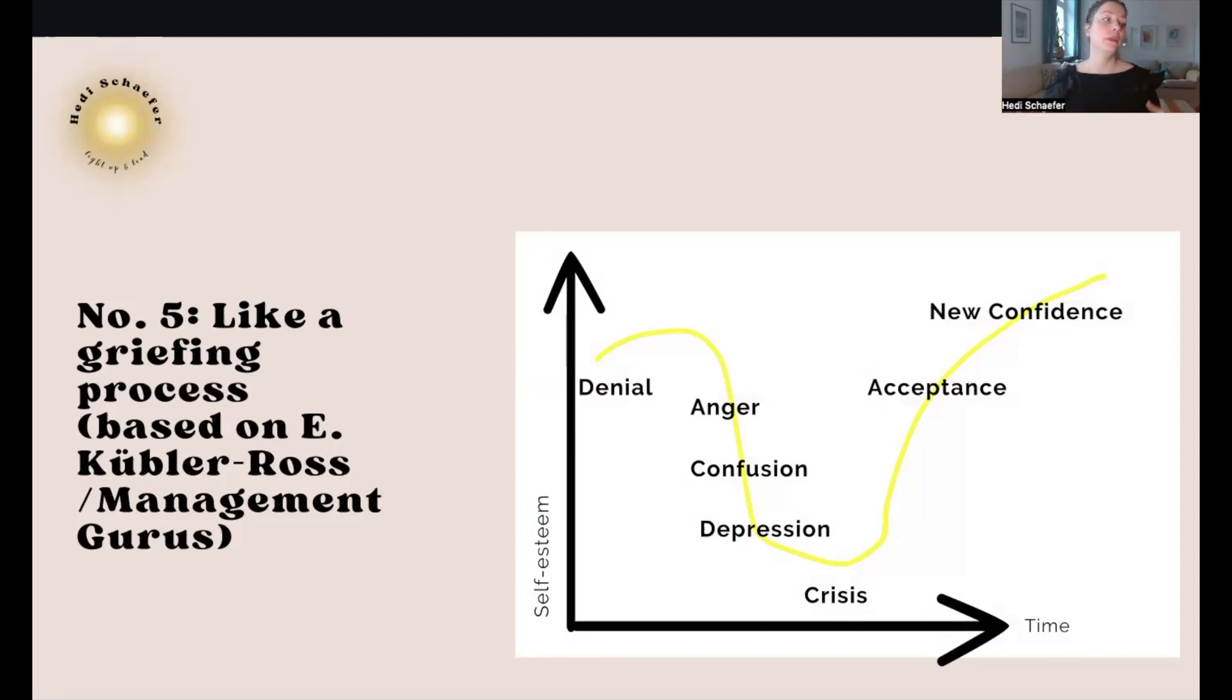Number five: This we can talk about, and we do in my masterminds very deeply, but I don't want to keep anything from you. This is a very important piece of the puzzle. You are almost going through a grieving process. This is based on Kübler-Ross and management gurus. This is how you go through change: from denial, oftentimes anger, oftentimes confusion, even depression, and then crisis, which is the break point and the make point into 'Okay, I accept where I am.'